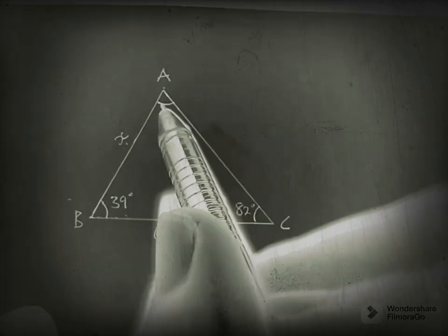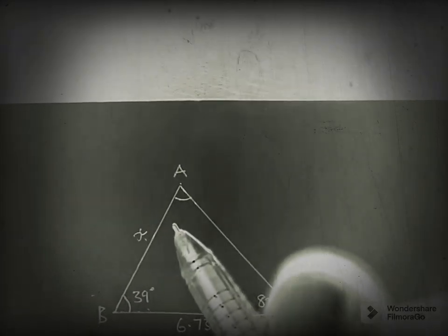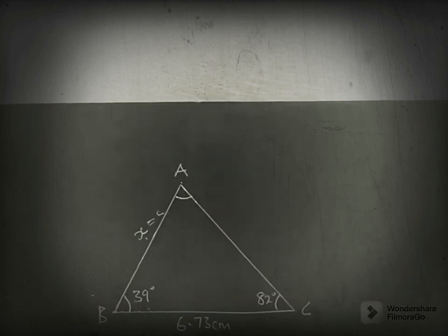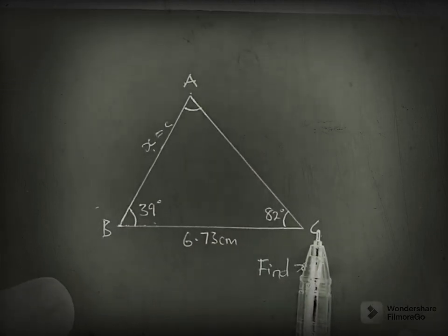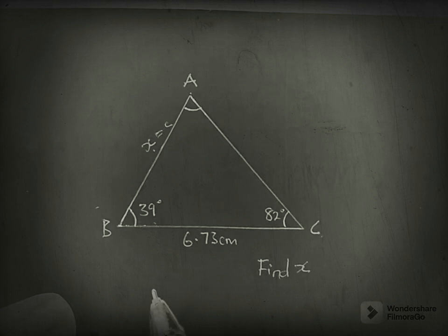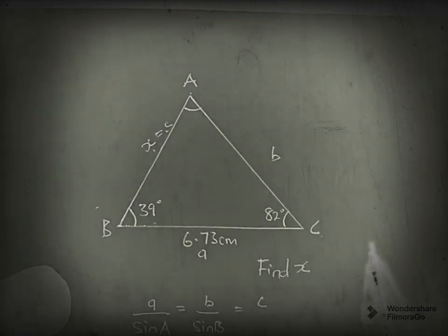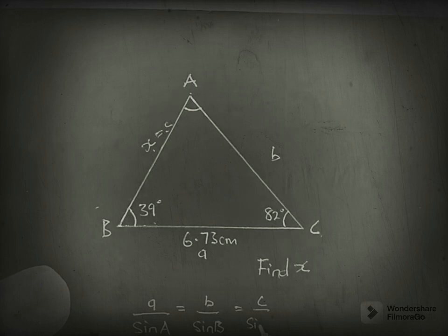We can say that small x is the same thing as small c because it is opposite to C. So small a over sin A equals small b over sin B equals small c over sin C.